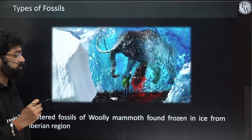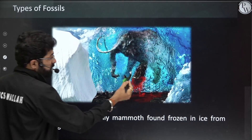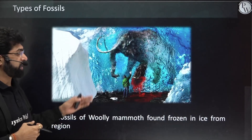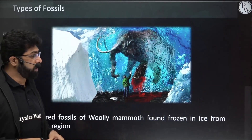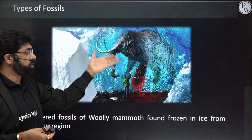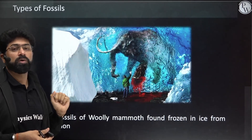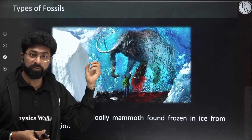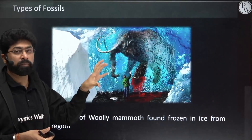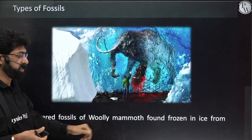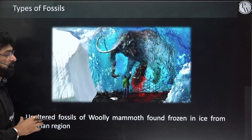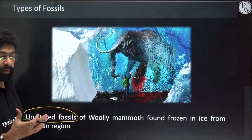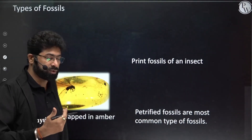Geological history correlates with biological history — whatever minerals and deposits you find in a region will tell you what kind of living forms existed. Now let's look at types of fossils. The mammoth fossil shown is preserved almost completely — even the blood and flesh are fresh because in very low temperatures in Siberia, microorganisms cannot work. This is called an unaltered fossil.